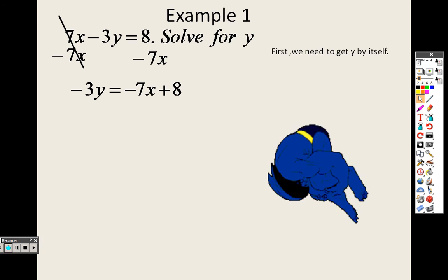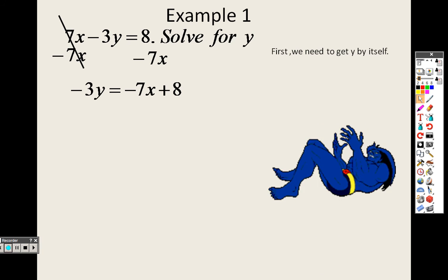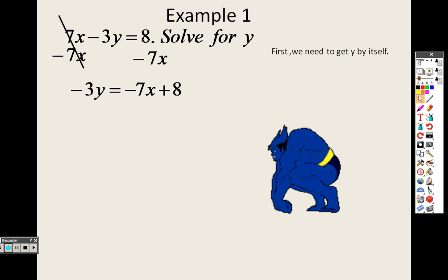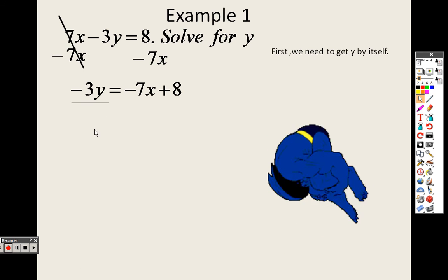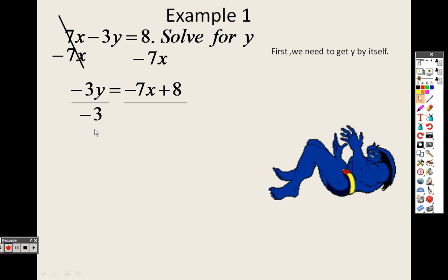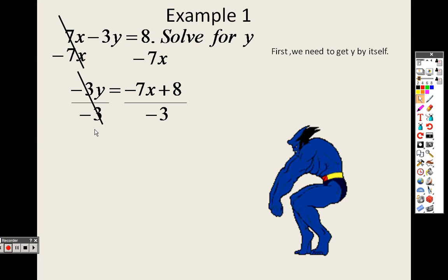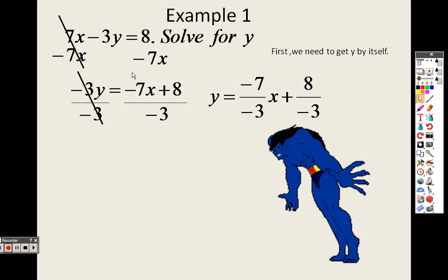Now, I need to get rid of that negative 3 in front of the y. And since it's negative 3 times y, the opposite of multiplication is division. So I divide both sides by negative 3. And I get y equals, and that means I have to divide each number by negative 3.